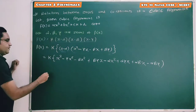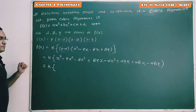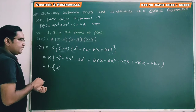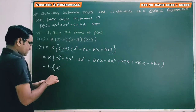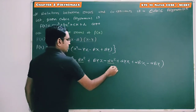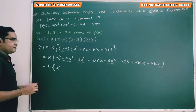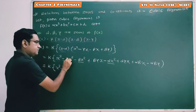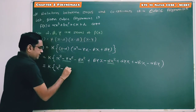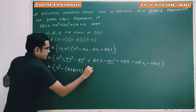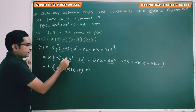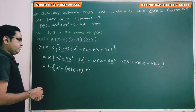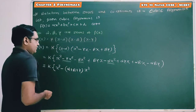Now we have to simplify and rearrange the terms. First, taking all terms with x cube power — x cube is there only. Now terms with x square: there are three such terms, so taking minus x square as common, the remaining terms are alpha plus beta plus gamma. So it becomes minus alpha plus beta plus gamma into x square.